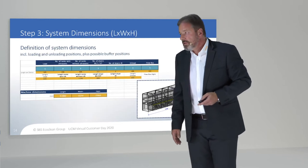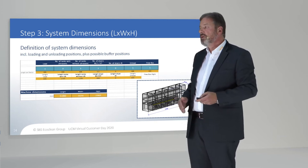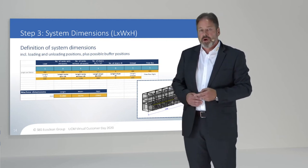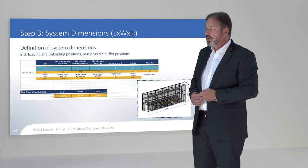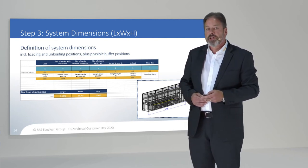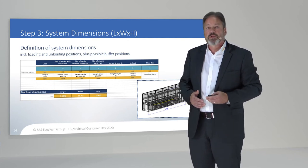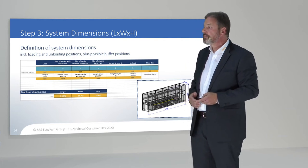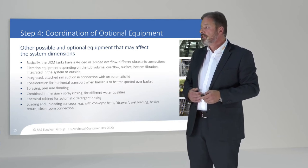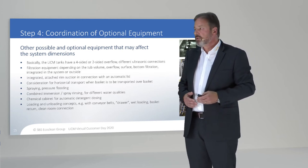When we calculate all this, we have different numbers for the loading position, the number of cleaning tanks, the number of rinsing tanks, the number of drying tanks, and the unloading position. This gives us the first information about the dimension of the whole machine, which is important to know whether it fits in the area where we want to install it.